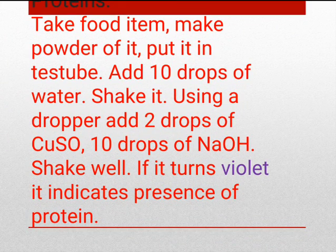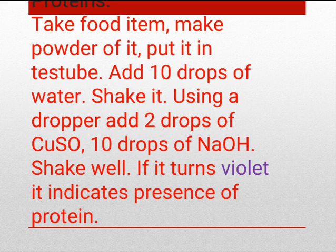Next is the test for proteins. Take a food item, crush or make a powder of it, and put it in a test tube. Add 10 drops of water and shake well. Then add 2 drops of copper sulphate solution and 10 drops of sodium hydroxide. When you shake it, the solution will turn violet, indicating that proteins are present.